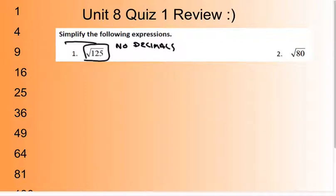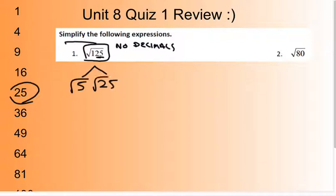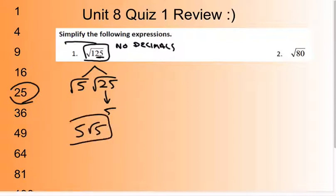Whenever I see 125, I'm automatically thinking about 25, so I can split that into 5 and 25. This is square root of 5 times square root of 25. The square root of 25 is just 5, so this simplified is going to be 5 square root of 5.